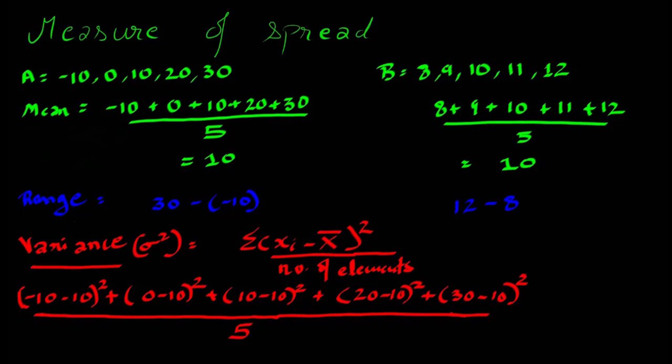Let's suppose we have two sets A and B, where A is -10, 0, 10, 20, and 30. Similarly, B has five elements: 8, 9, 10, 11, and 12.